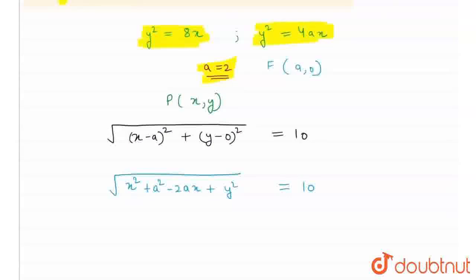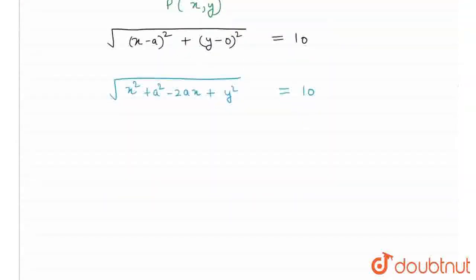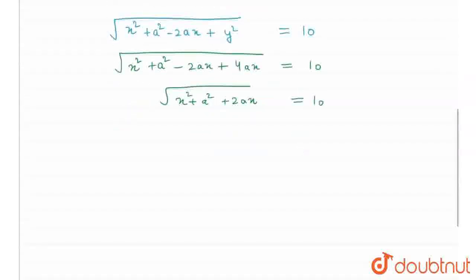So I can write my y square is equal to 4ax. It would be x square plus a square minus 2ax plus 4ax equal to 10 under root. This would be x square plus a square plus 2ax under root which would be equal to 10, and this is nothing but x plus a whole square under root is equal to 10.